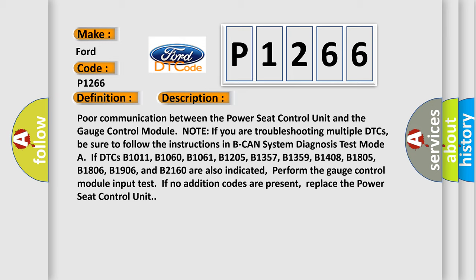B1061, B1205, B1357, B1359, B1408, B1805, B1806, B1906, and B2160 are also indicated, perform the gauge control module input test. If no additional codes are present, replace the power seat control unit.